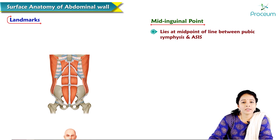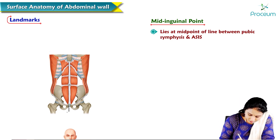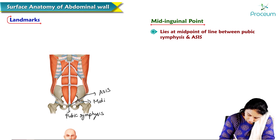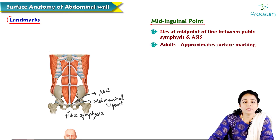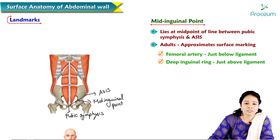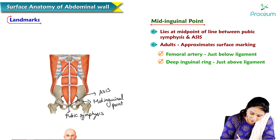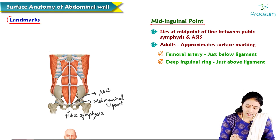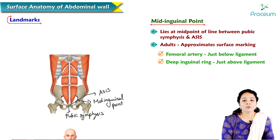The mid-inguinal point lies at the midpoint of a line between the pubic symphysis and the anterior superior iliac spine. In adults, it approximates the surface marking of the femoral artery, which lies just below the inguinal ligament. Just above the mid-inguinal point is the location of the deep inguinal ring.